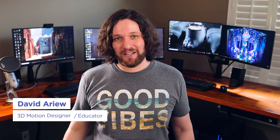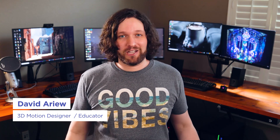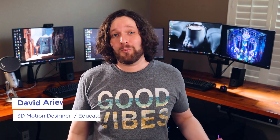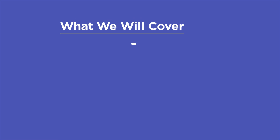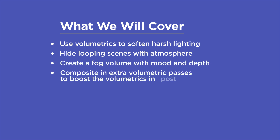Hey, what's up. I'm David Aryev and I'm a 3D motion designer and educator, and I'm going to help you make your renders better. In this video you'll learn to use volumetrics to soften harsh lighting, hide looping scenes with atmosphere, create a fog volume and tweak settings to add mood and depth, and composite in extra volumetric passes to boost the volumetrics in post.